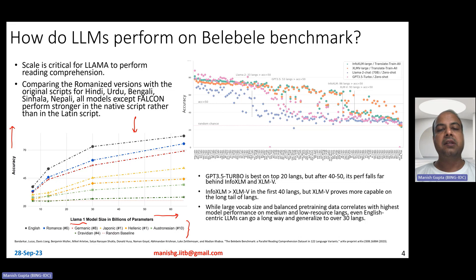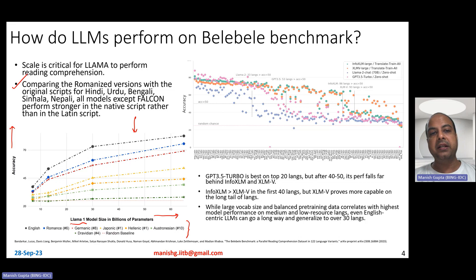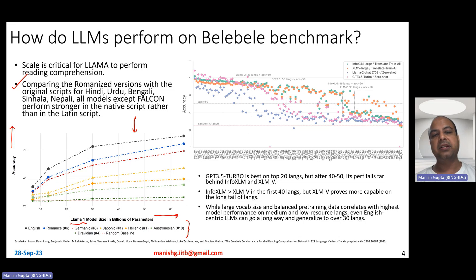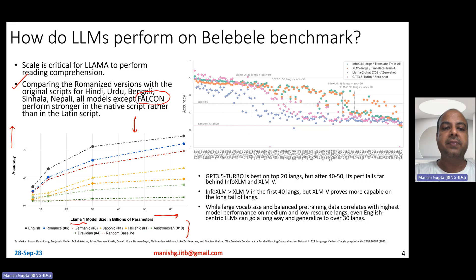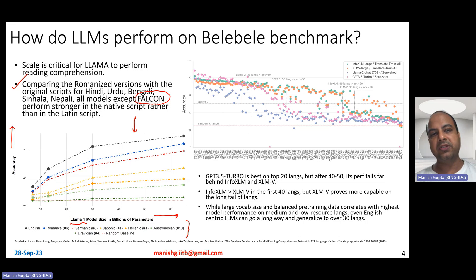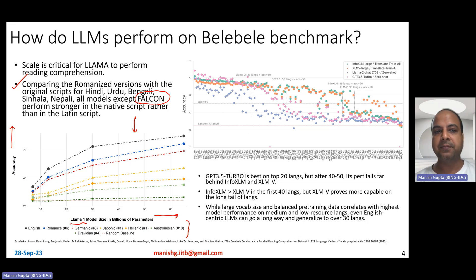For the five languages with romanized versions — Hindi, Urdu, Bengali, Sinhala, and Nepali — all models actually perform stronger in the native script rather than in the Latin script. So transliteration does not help; these models really perform well in the original native script itself, except for the Falcon model, whose pre-training data does not include some of these languages. In general, if the language was included in pre-training data, native script is better than transliteration to Latin or Roman script.